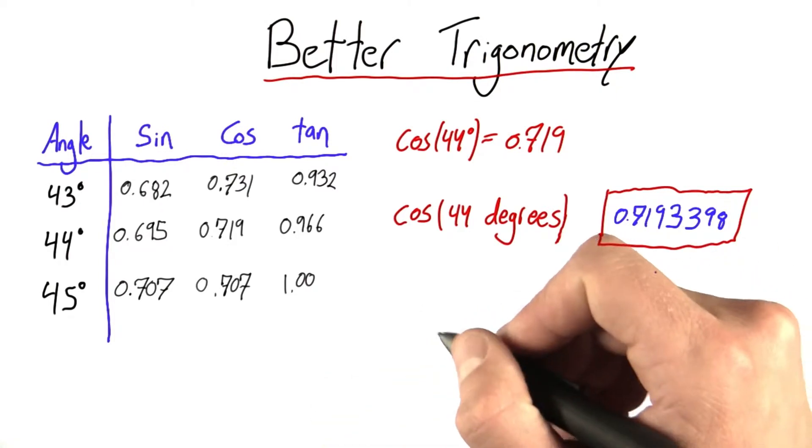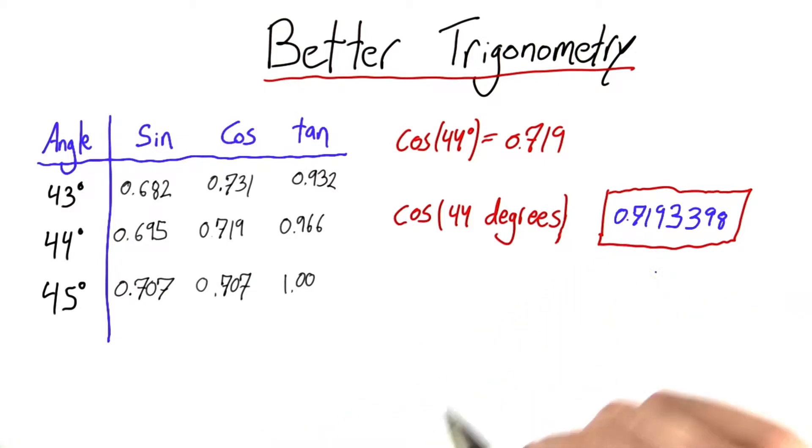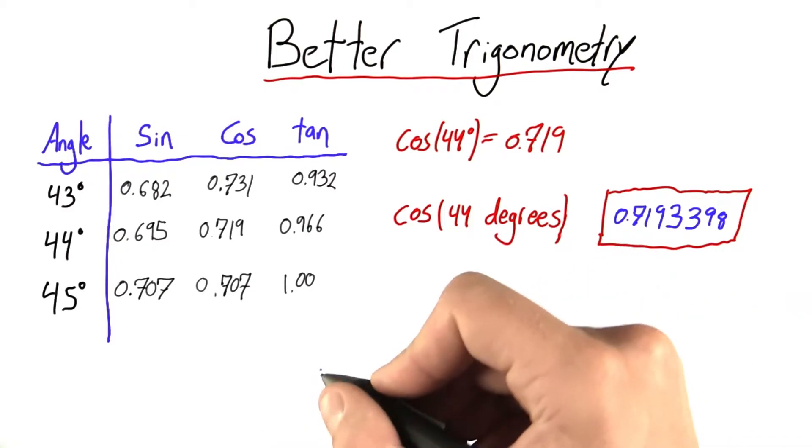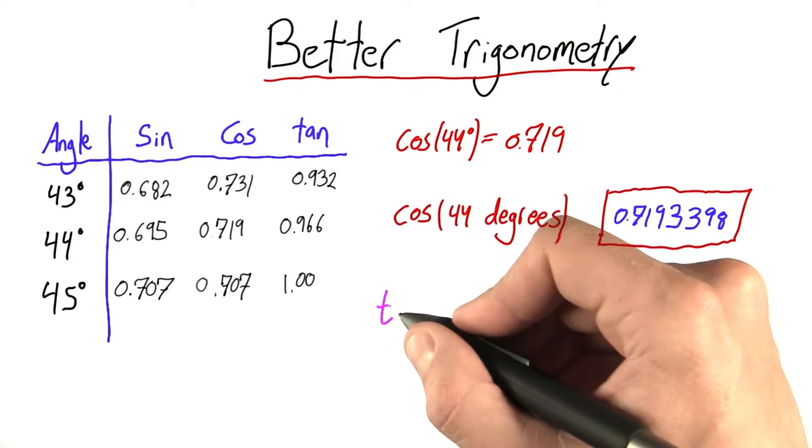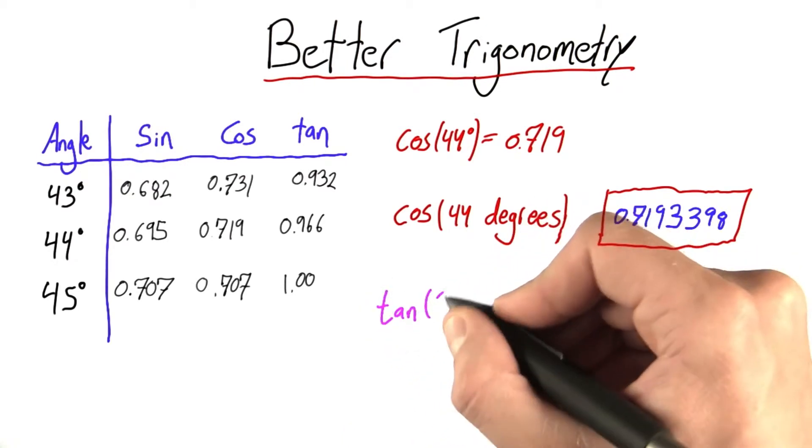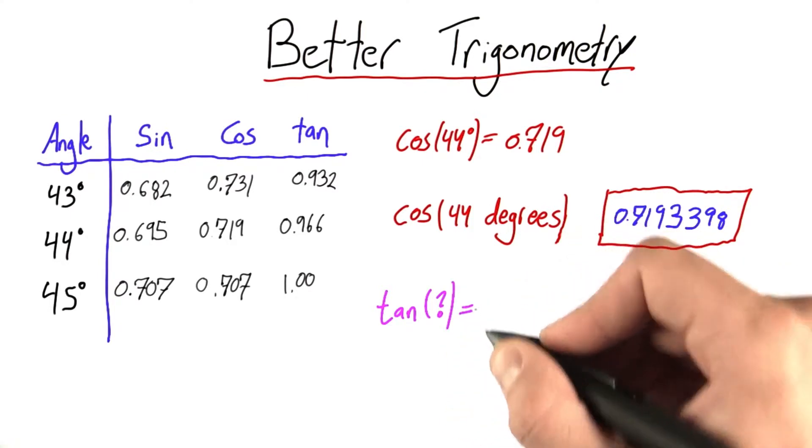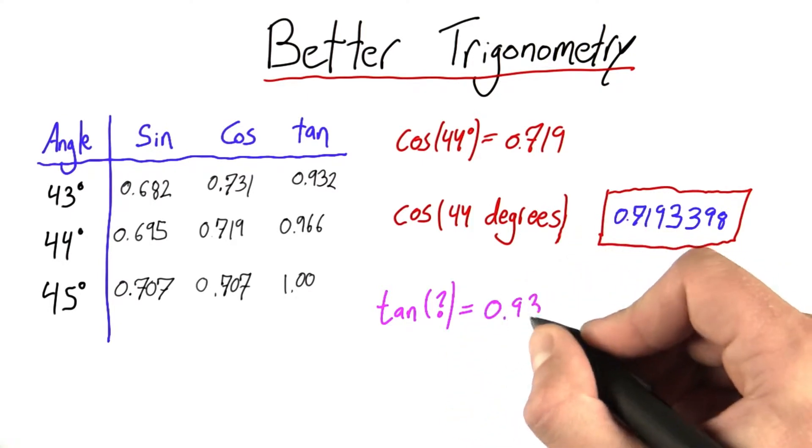So what if I told you I have an angle and the tangent of that angle is 0.932? Maybe a way to write that would be: tangent of some angle (I don't know what) is equal to 0.932.